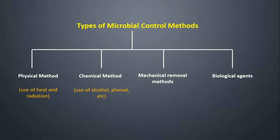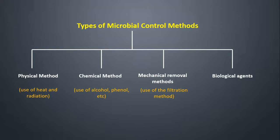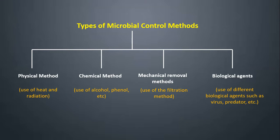Mechanical removal methods involve the use of filtration to control the growth of microorganisms. In this method, the microorganisms are removed rather than killed. Biological agents involve the use of different biological agents such as viruses, predators, etc. to control the growth of microorganisms.